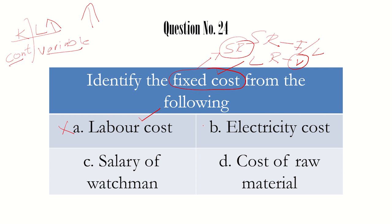Electricity cost is not the answer. Salary of a watchman has all the features to qualify as fixed cost. Let us check the last option: cost of raw material — as production increases, raw material consumed also increases, so that is not fixed. Therefore the answer is salary of the watchman, which remains fixed regardless of output.